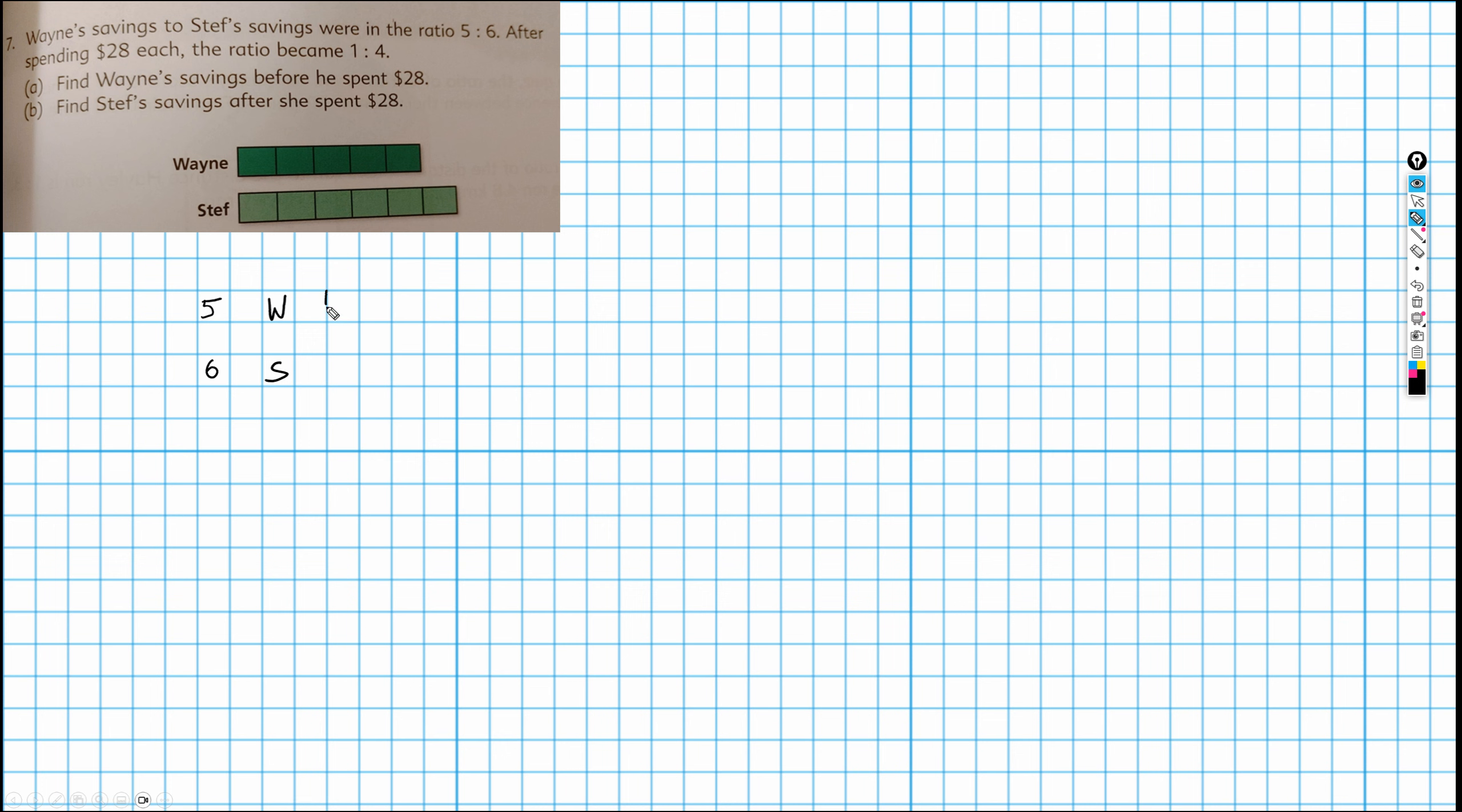Right, so we're going to draw a bar for Wayne and a bar for Steph. I'm going to start off drawing this beginning situation where the ratio is 5 to 6. So what I'm going to do is draw, what does Wayne have? He has 1, 2, 3, 4, 5 parts. Plus he has this $28. That represents the $28.